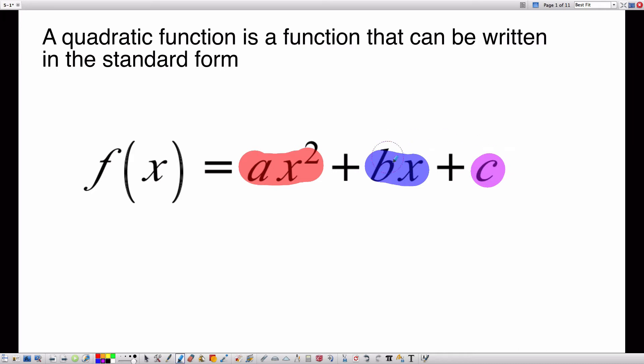Notice these two terms don't have to be here. If b or c was 0, then either of these terms would go away, and I might have something that looks like 2x squared, and that's it. But this is still a quadratic function. This term is what is necessary in order for it to be a quadratic function. The other two terms can be there or not.